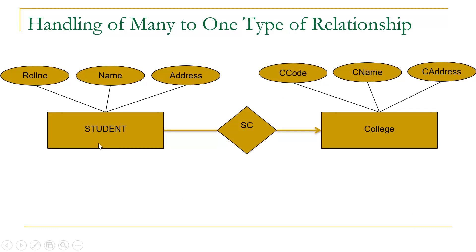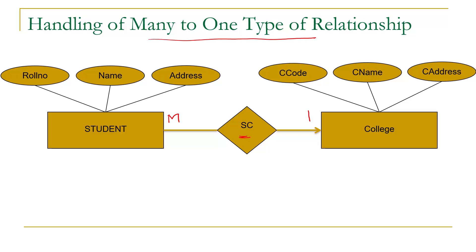Let us consider this ER diagram. In this ER diagram we have two entity sets — one is Student and another is College. The Student entity set has three attributes: row number, name, and address. College also has three attributes: C code, C name, and C address. A student can join maximum one college, but for a given college there will be multiple students. So the relationship between Student and College is a many-to-one type of relationship.